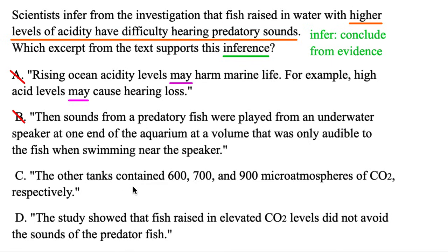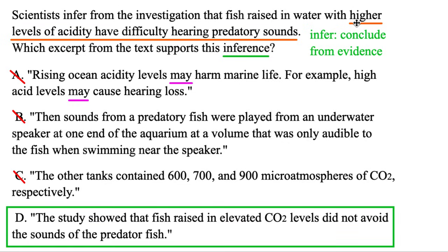Option C: the other tanks contained 600, 700, and 900 micro-atmospheres of CO2 respectively. Once again, they're explaining the setup, but not providing any evidence. So C is out. Finally, option D: 'the study showed' — that's important, this is evidence — that fish raised in elevated CO2 levels did not avoid the sounds of predator fish. We have evidence for the claim we're trying to prove, and that makes D a good inference and our correct answer.